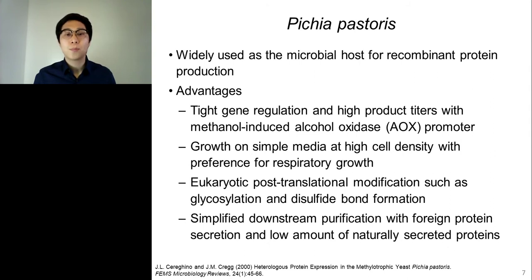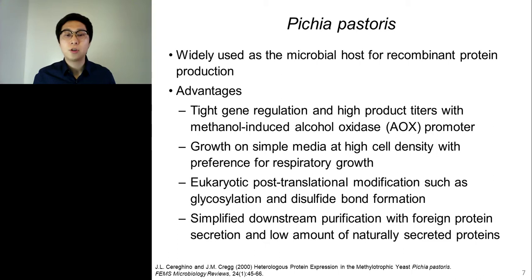The cell considered for bioreactor modeling was Pichia pastoris. Pichia pastoris is a methylotrophic yeast widely used as a microbial host for recombinant protein production. The system has the advantages of tight gene regulation and high product titer with methanol-induced alcohol oxidase promoter, growth on simple media at high cell density with preference for respiratory growth, eukaryotic post-translational modifications such as glycosylation and disulfide bond formation, and simplified downstream purification with foreign protein secretion and a low amount of naturally secreted proteins.